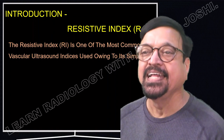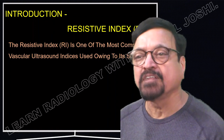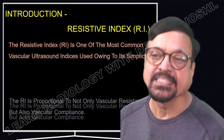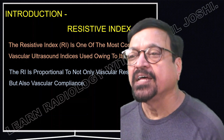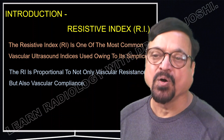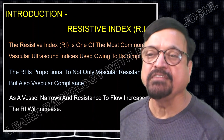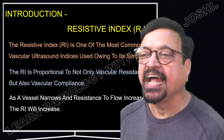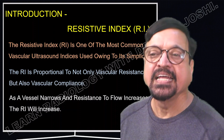Coming back to RI — the Resistive Index is one of the most important vascular ultrasound indices, owing to its simplicity. The RI is proportional not only to vascular resistance but also vascular compliance, giving a complete picture of the vasculature. As a vessel narrows and resistance to flow increases, the RI will increase.